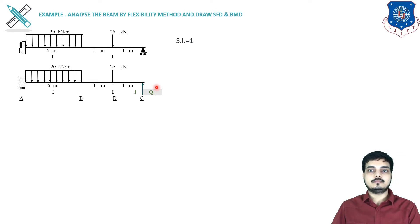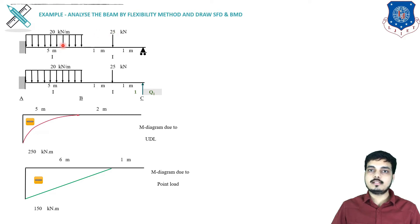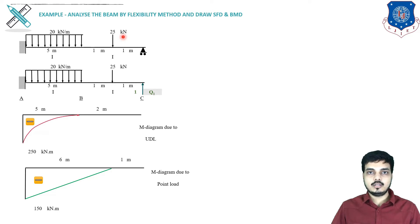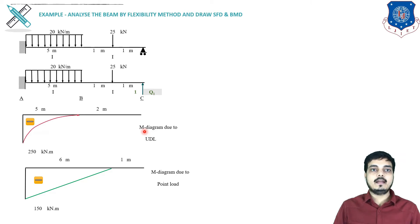So how do we proceed? First we will construct the bending moment diagram due to the given loading. There are two loadings: a UDL and a point load, and we will take them one by one. Since A is the fixed support, we take resistance at A only. Note: wherever I use capital M it relates to external loadings, and wherever I use small m it relates to the redundant.